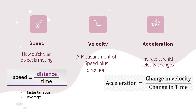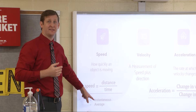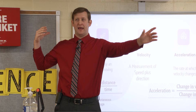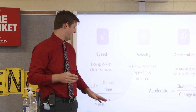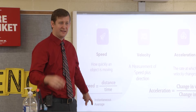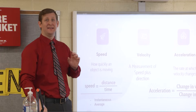Instantaneous speed is your speed at that exact moment in time — like looking at a speedometer. If you drive from the airport to the mall with an average speed of 45 miles per hour, you can't say your instantaneous speed is 45 the entire time, because you'll stop at red lights and the speed limit will change. Average speed is the total distance you travel divided by the total time it takes.